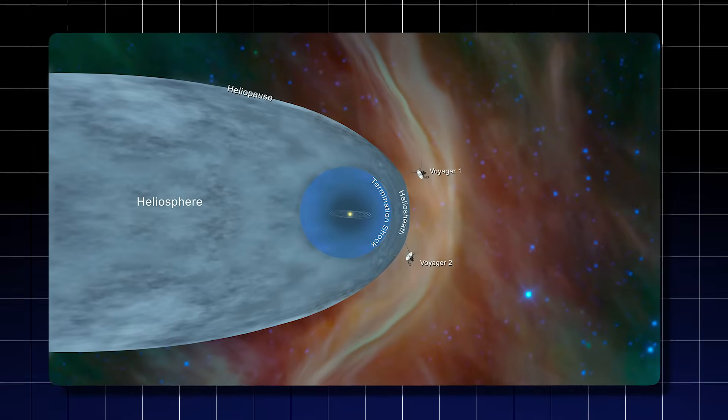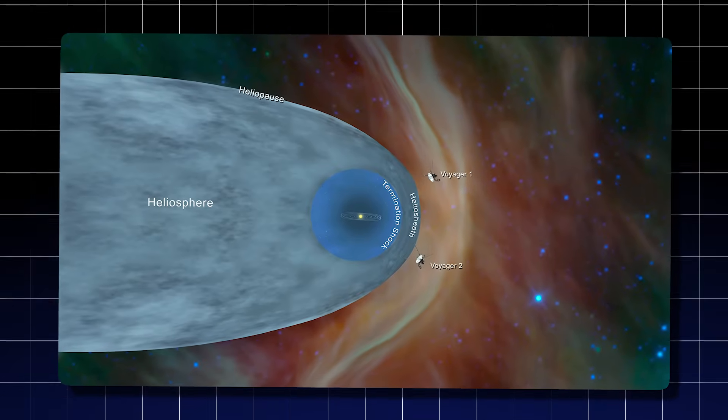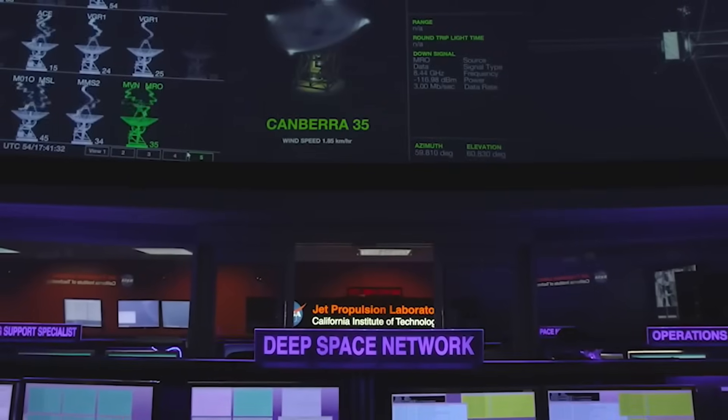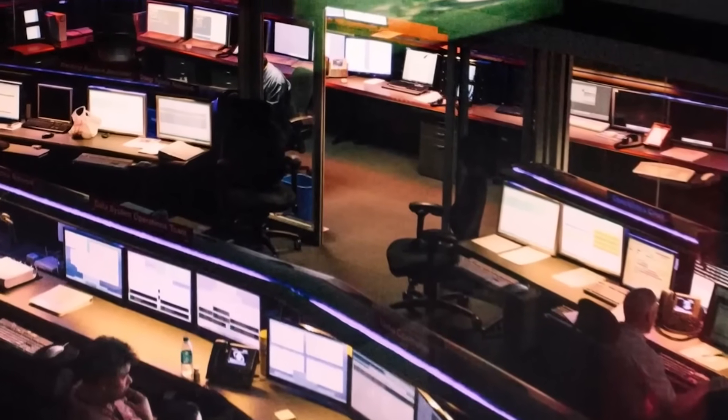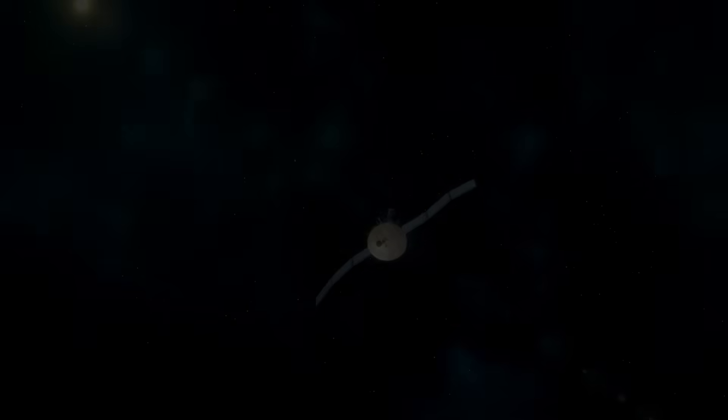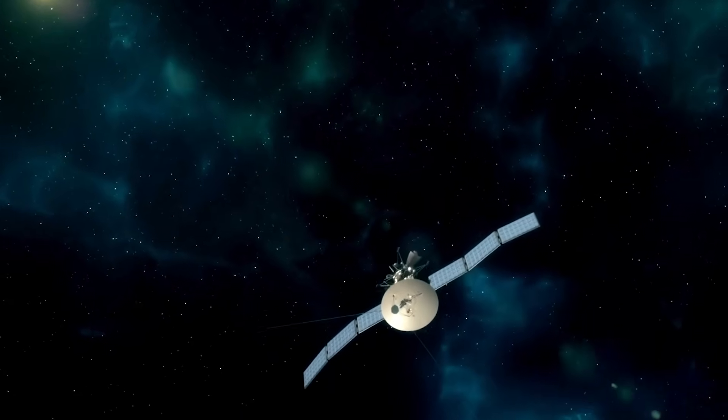Voyager 1 has been traveling through what is referred to as the heliopause, the outer limit of the sun's influence, since 2012. It has sent back measurements of the density of interstellar plasma and magnetic fields, painting a picture of a largely silent, desolate region.